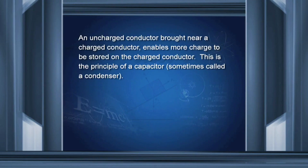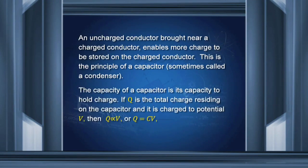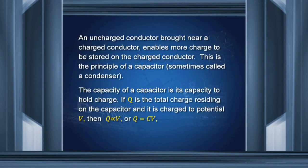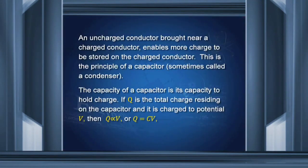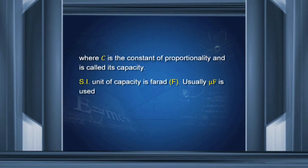The capacity of a capacitor is its capacity to hold charge. If Q is the total charge residing on the capacitor and it is charged to potential V, then Q is proportional to V — the charge held is proportional to the potential difference between the two plates. We write Q equals C times V, where C is the constant of proportionality called the capacitance. The SI unit of capacitance is the farad, but farad is a very large unit, so we usually use microfarads.